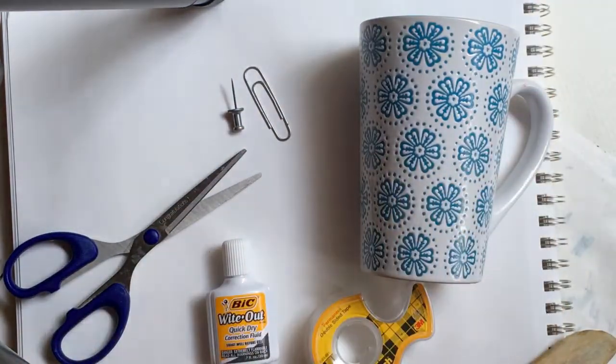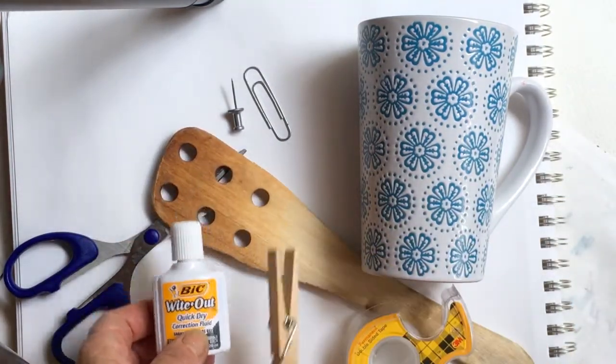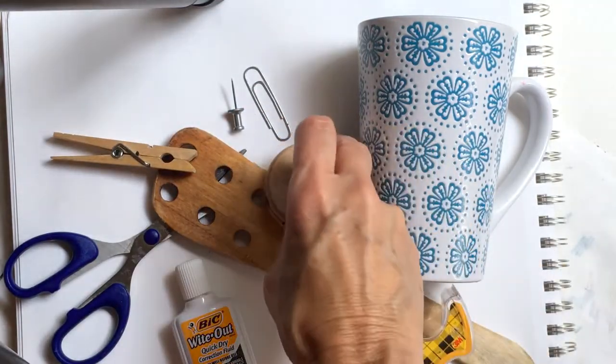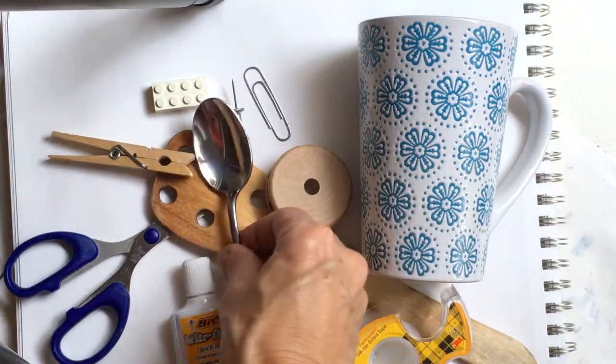You're going to want some things that are big, some really small things, and some objects that are medium-sized. Notice how small the pushpin is compared to the coffee cup or the wood spoon. The whiteout and the tape are medium-sized objects.